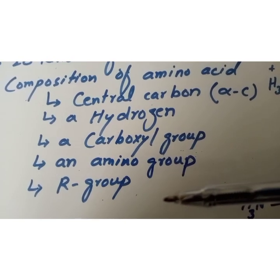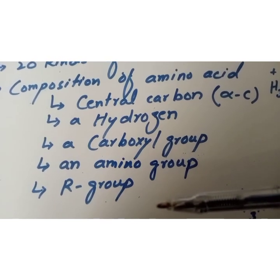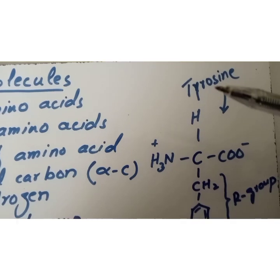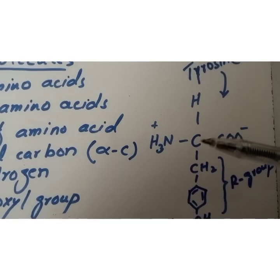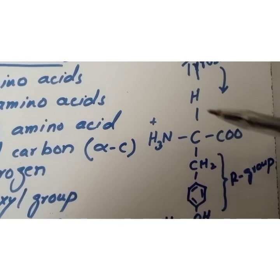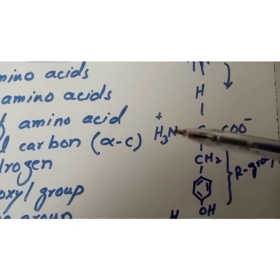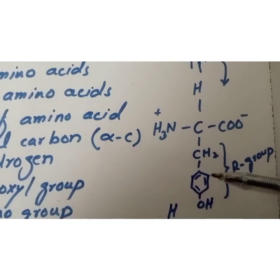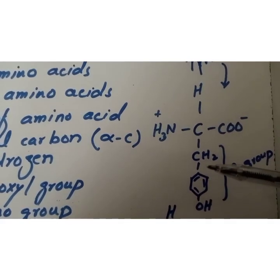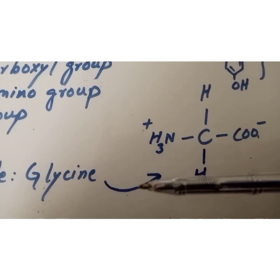The last component is the R group, which is a unique side chain of each amino acid. For example, in tyrosine: that is the alpha carbon, that is the hydrogen group, that is the carboxyl group, that is the amino group, and that is the R group — the unique side chain of that amino acid.